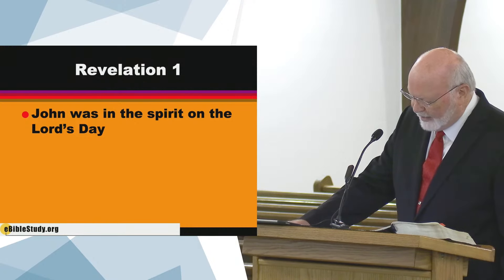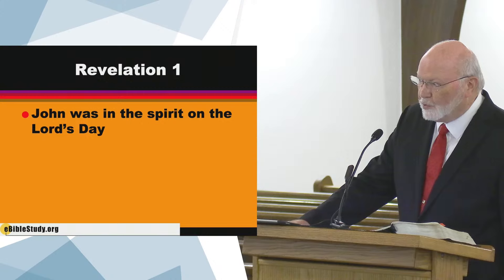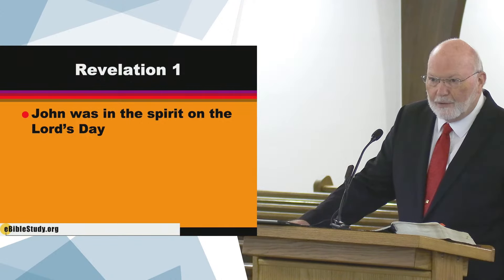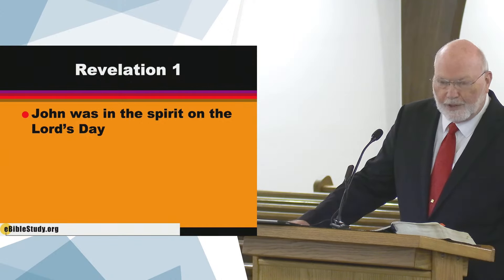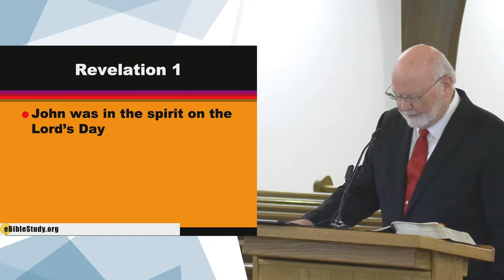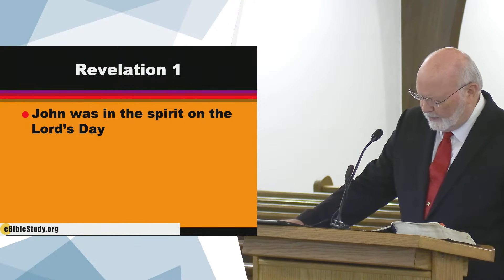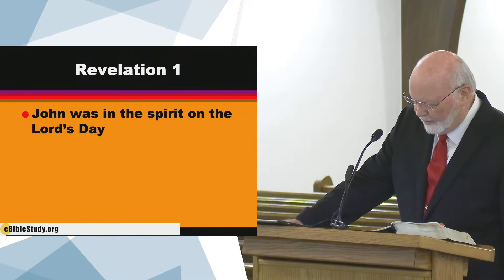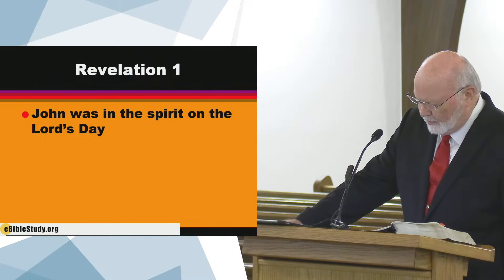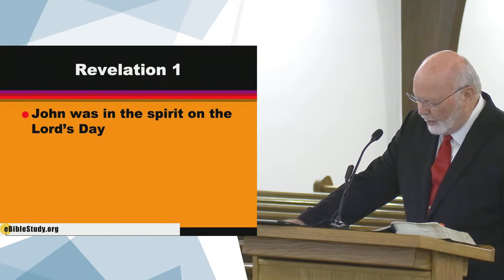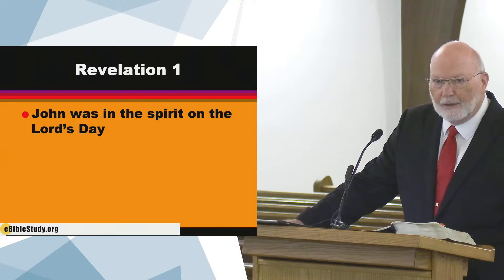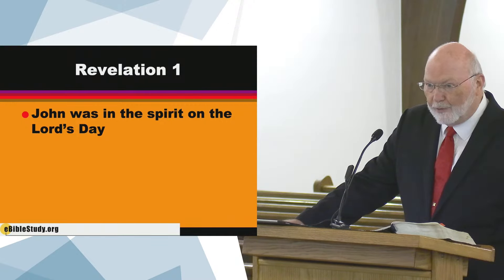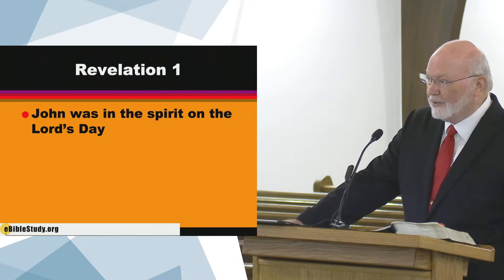He was walking among seven golden lampstands. King James says 'candlesticks' because candles were used when the King James was written, but these were actually lampstands. We're going to go through this and come back to deal with the text in more detail. Number four: Jesus asked John to write down what he saw and send it to seven churches.